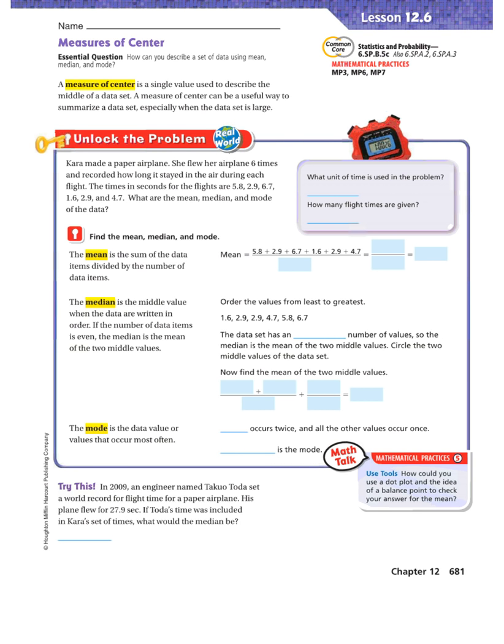Unlock the problem. Kara made a paper airplane. She flew her airplane six times and recorded how long it stayed in the air during each flight. The times in seconds for the flights are 5.8, 2.9, 6.7, 1.6, 2.9, and 4.7. What unit of time is used in the problem? Seconds. How many flight times are given? 1, 2, 3, 4, 5, 6. There were six flights.